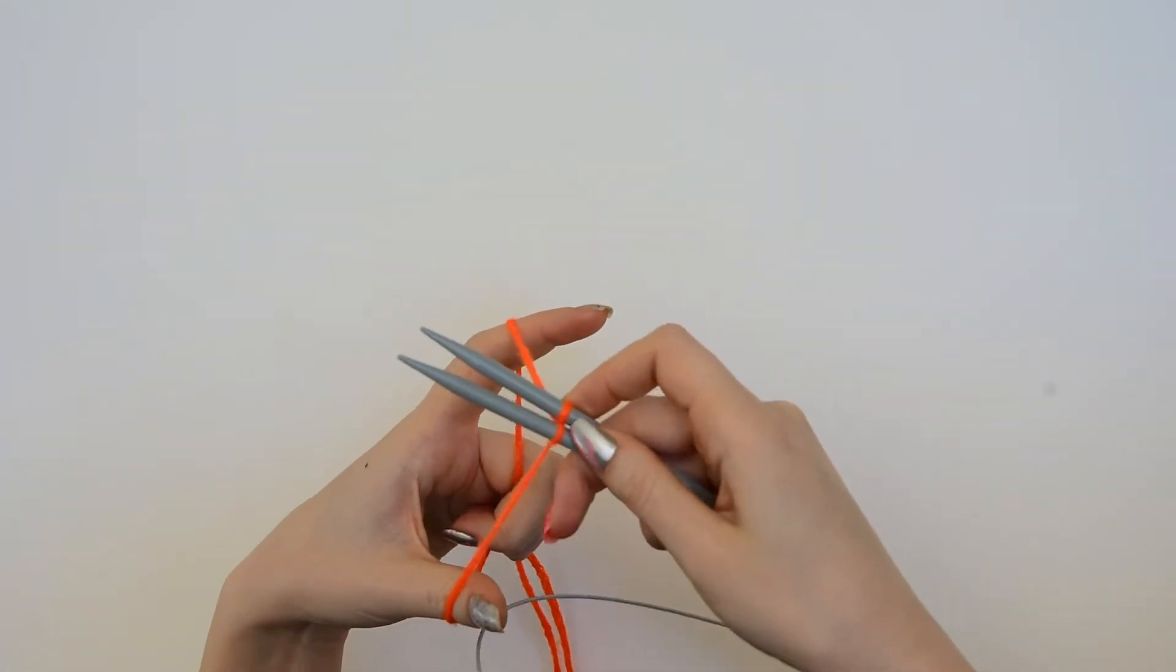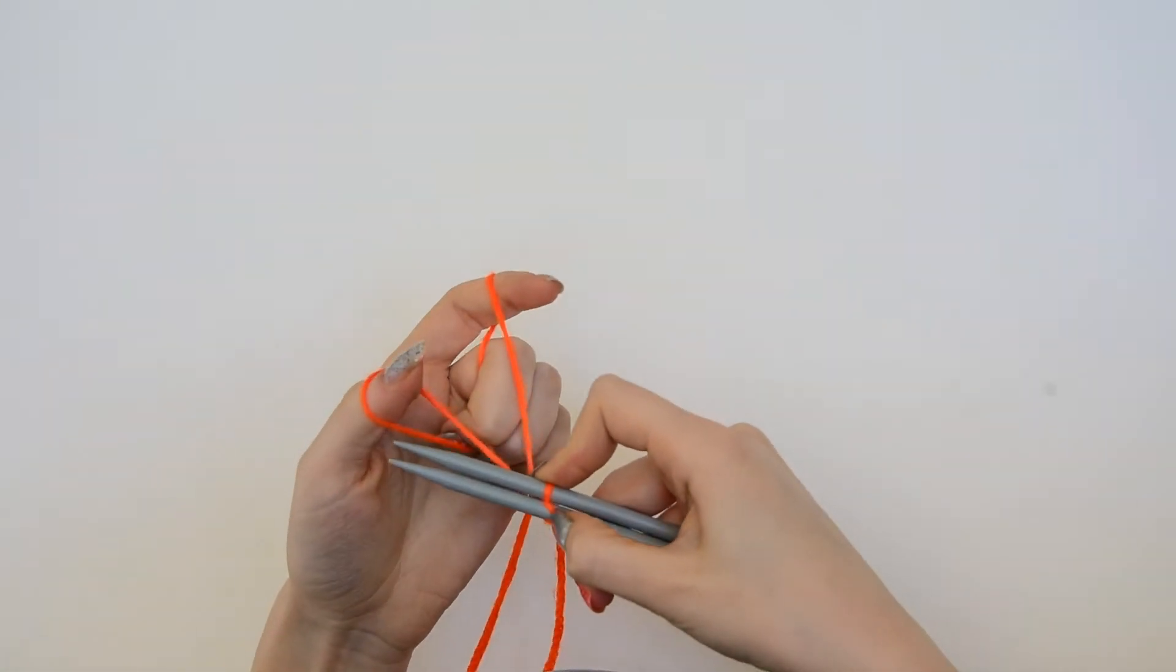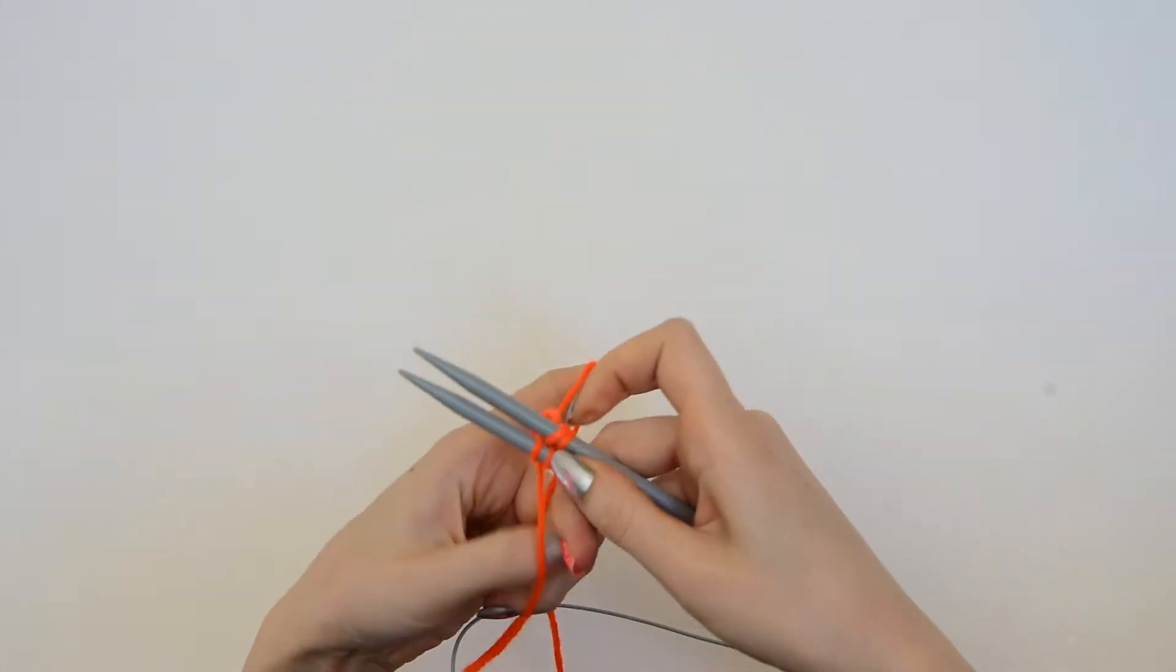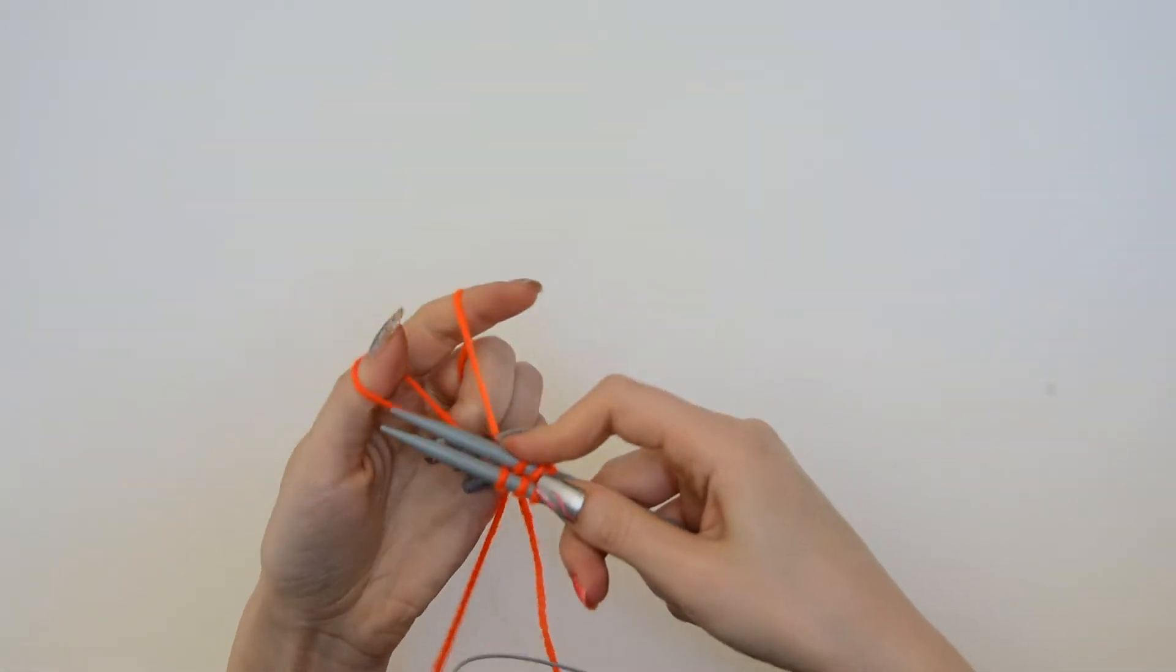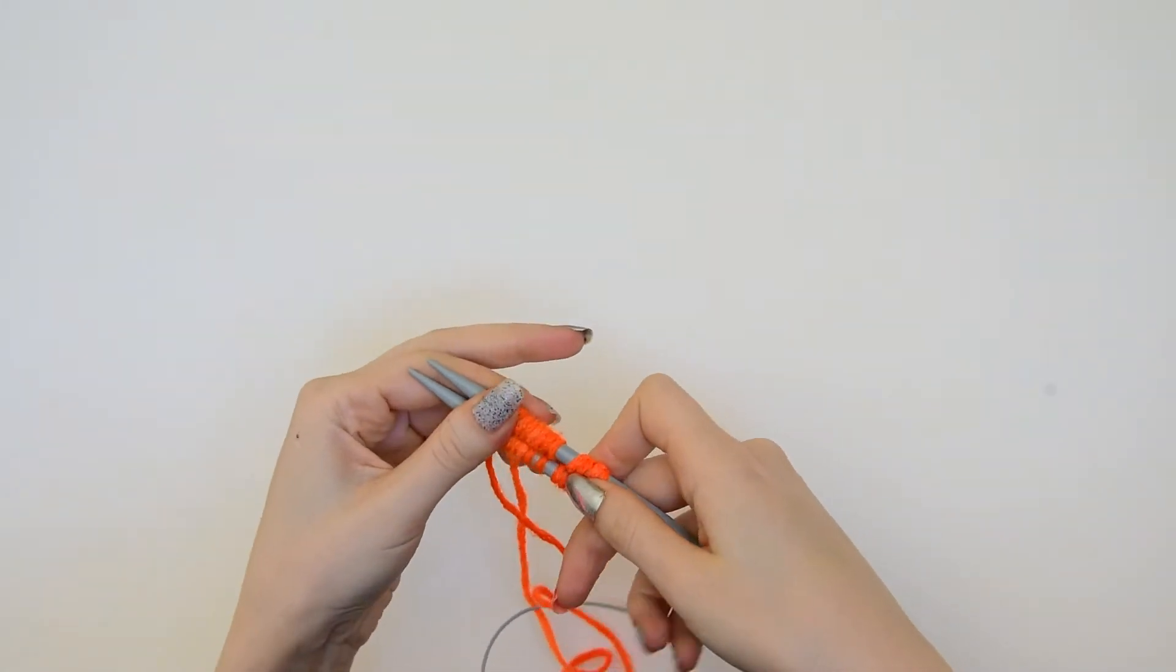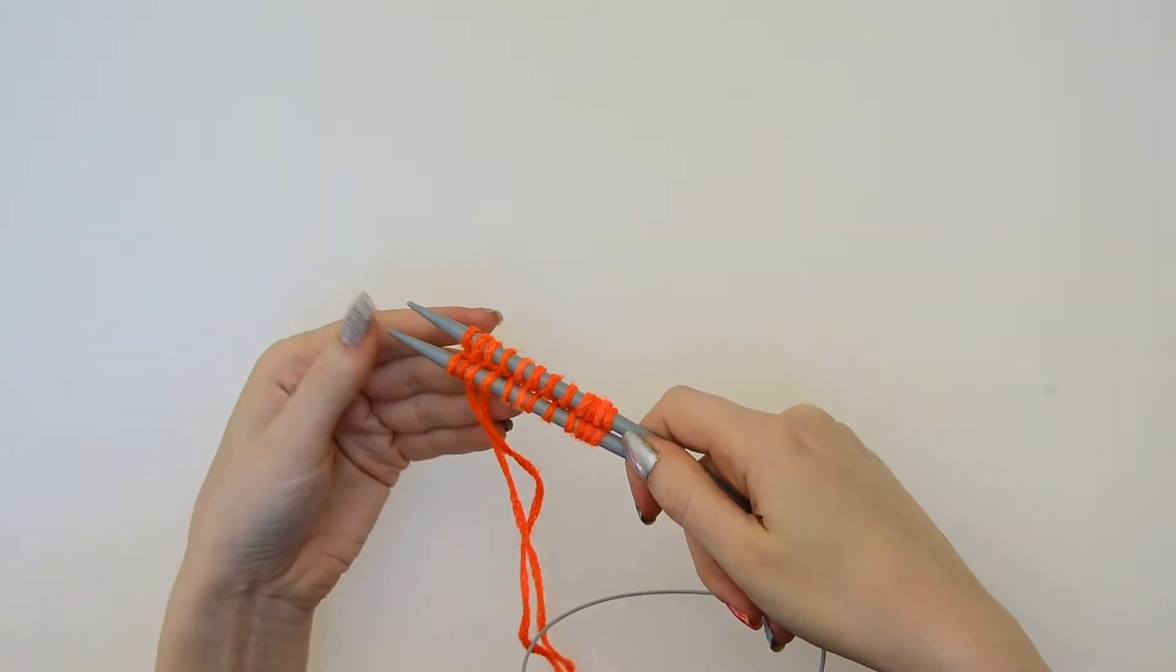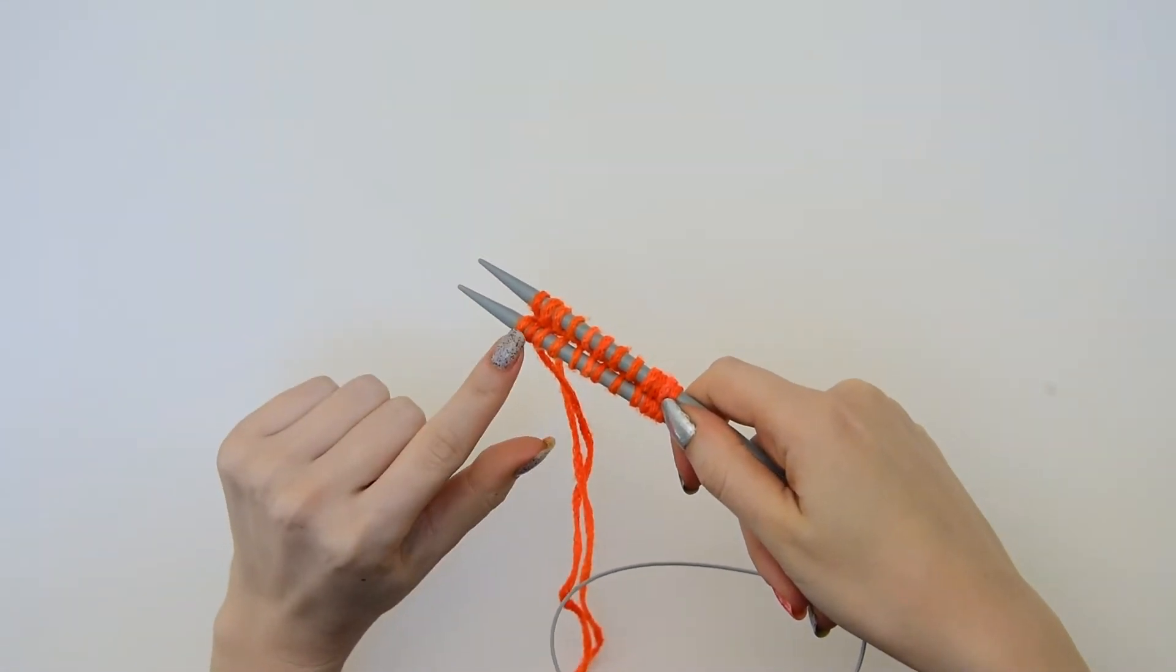I've now begun the cast-on. I'm going to continue using the long tail method alternating between the top needle and the bottom needle until I have the desired number of stitches. Unless otherwise specified in the pattern you're using, you'll probably be working with an even number of stitches. So I've just cast-on my last stitch on the bottom needle.